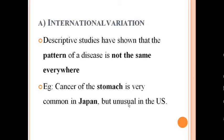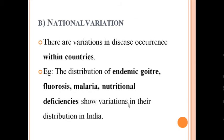Descriptive studies have shown that the pattern of disease is not the same everywhere. For example, stomach cancer is very common in Japan but not in the United States. National variations include the distribution of endemic goiter, fluorosis, and malaria — malaria is more prevalent in Chhattisgarh and lesser in Himalayan states. Nutritional deficiencies also follow national variation within the limits of a country.